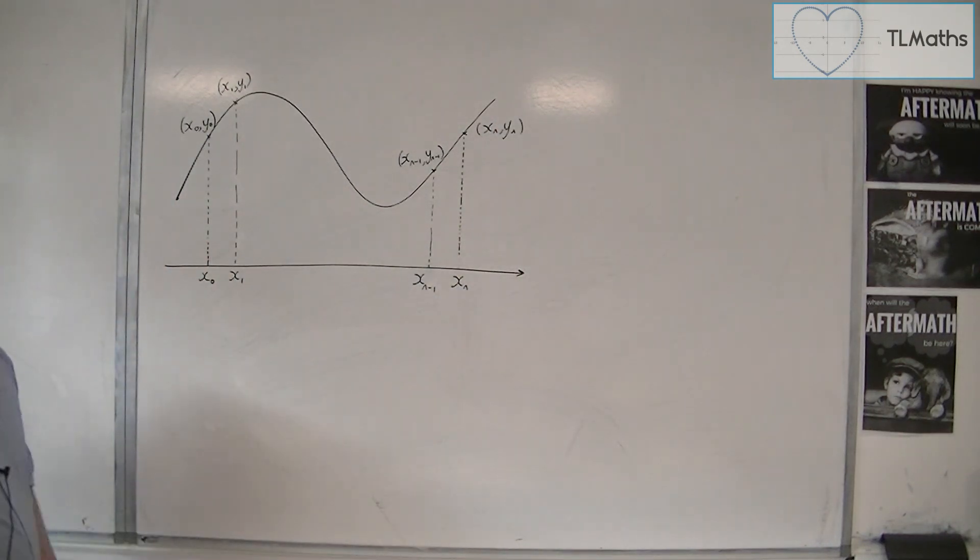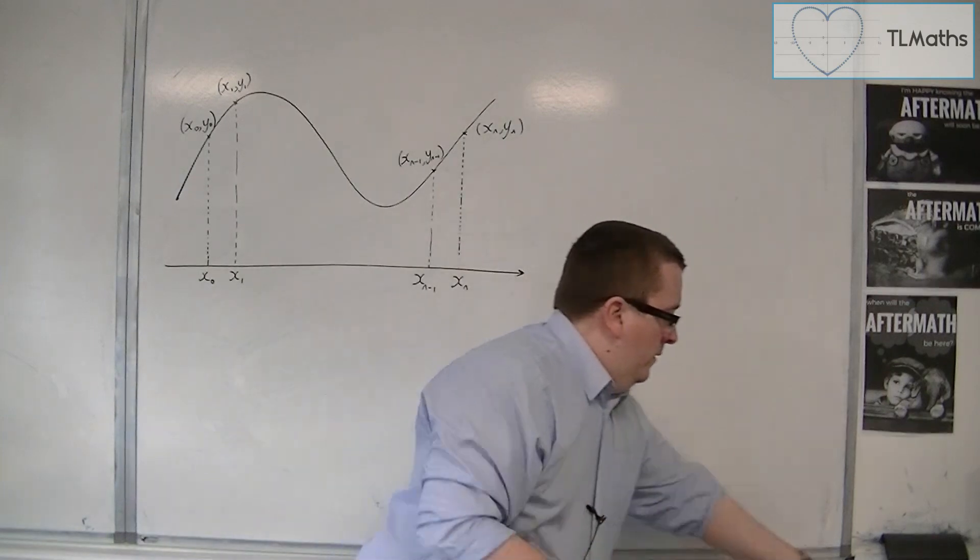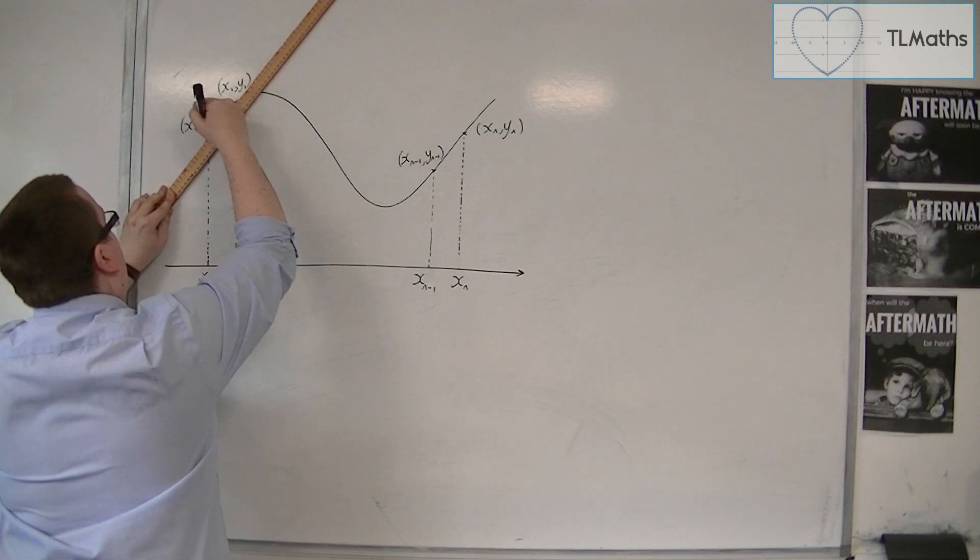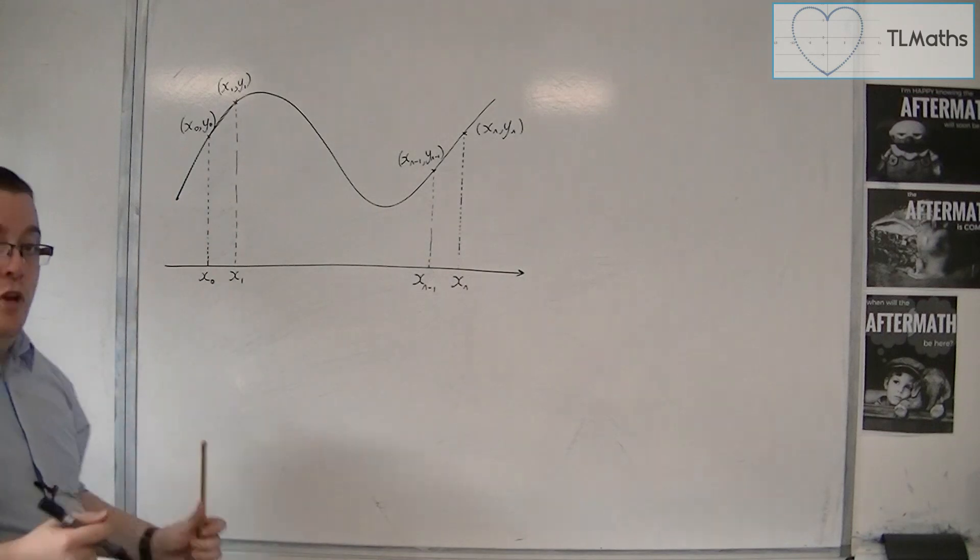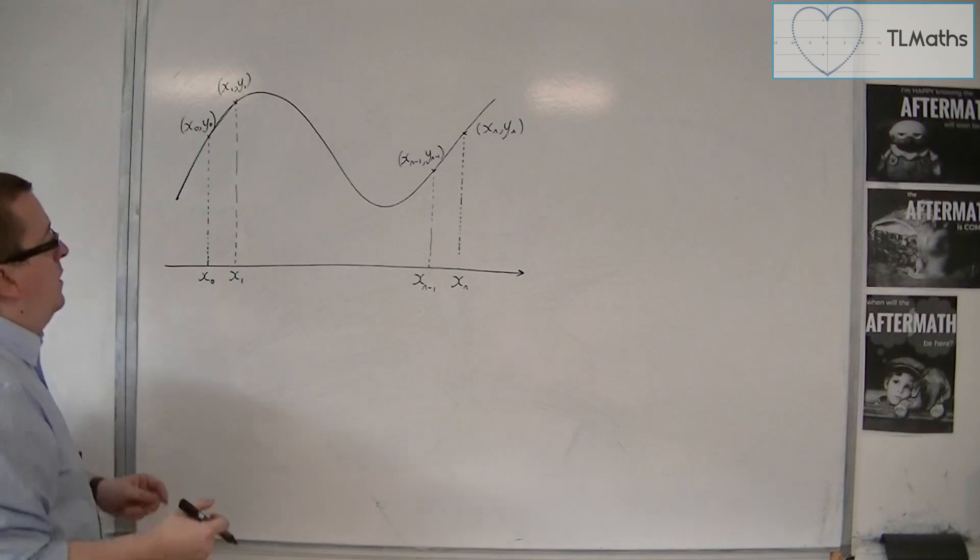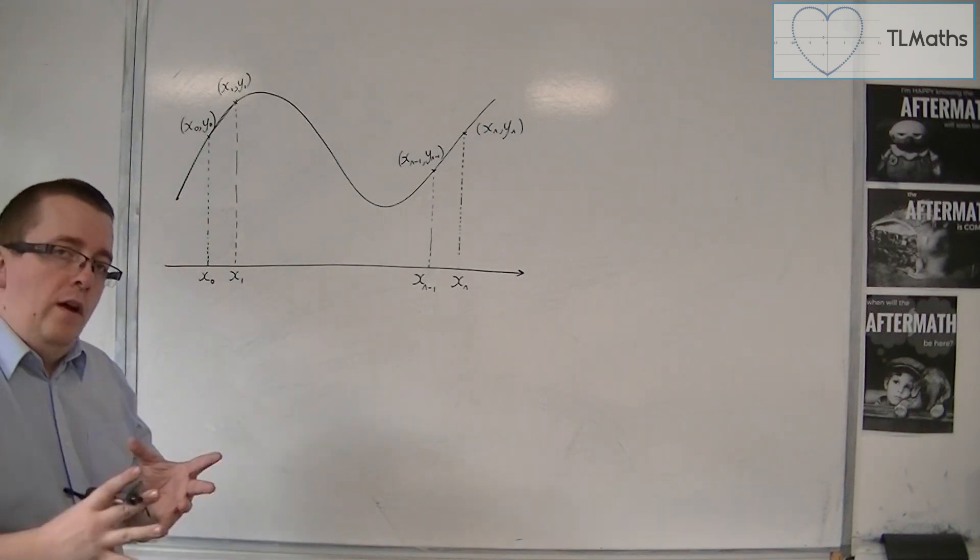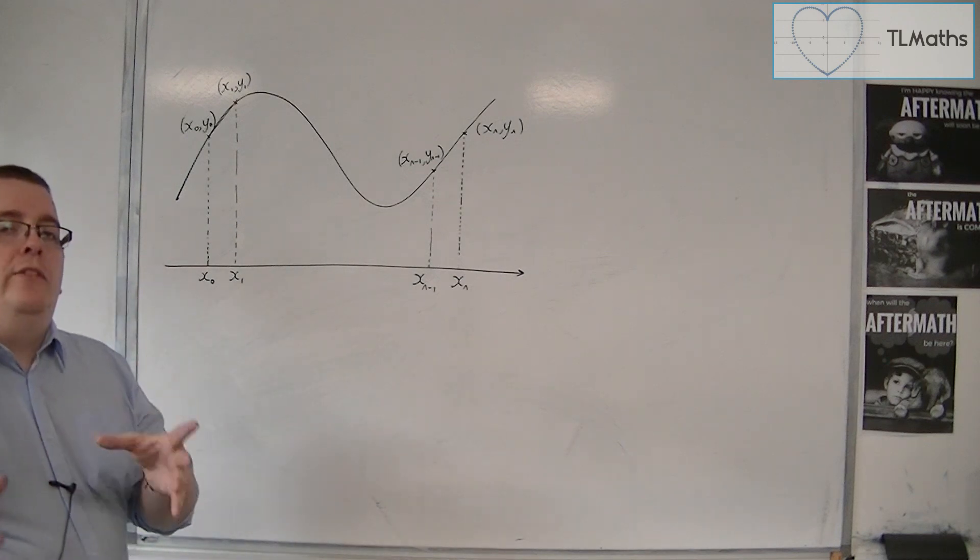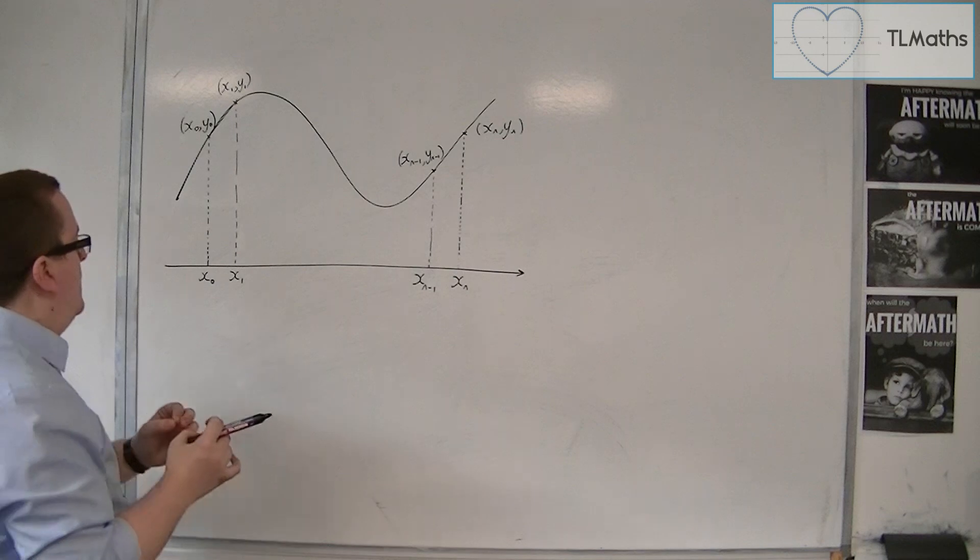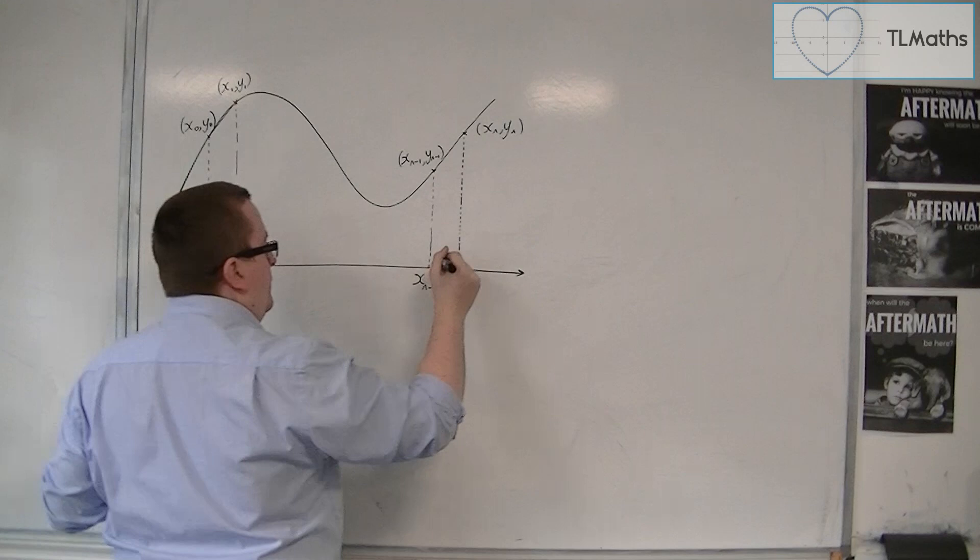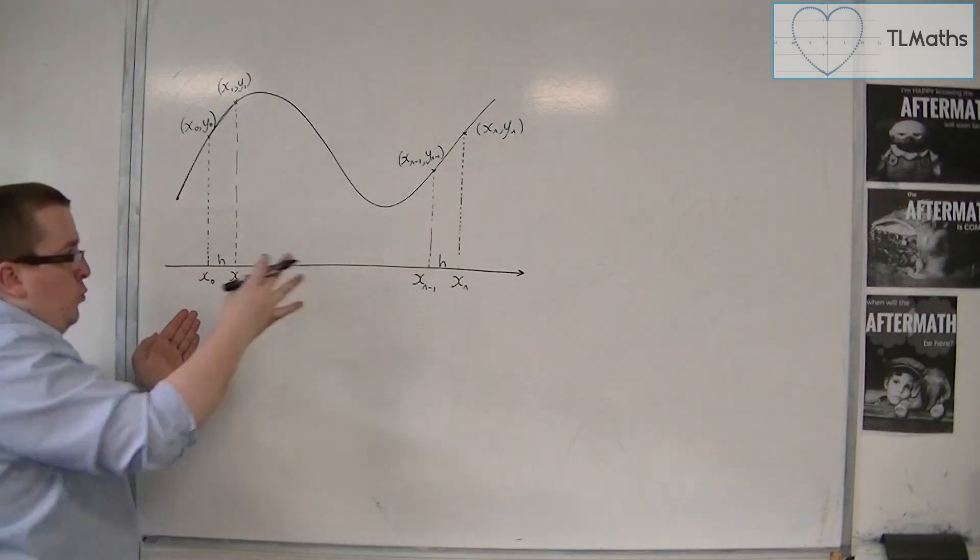So each time I can draw myself a little trapezium, or a chord joining those two points, and create that trapezium shape. So in order for this to work, what I must have is each strip width to be exactly the same thing. So what I'm going to say is that each strip width is going to be h. Each width the same length.